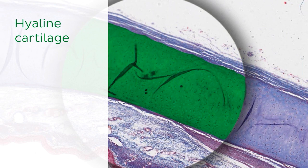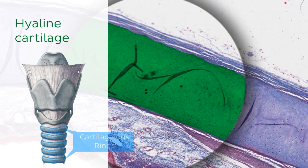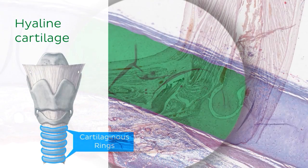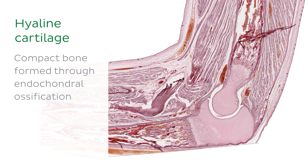Here in this micrograph we see an example of hyaline cartilage. This is a section taken from the cartilage rings found in the wall of the trachea. An interesting note to remember is that during fetal development, compact bone of the human skeleton is formed through a process known as endochondral ossification.